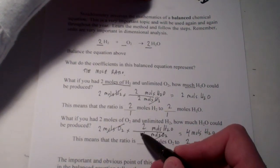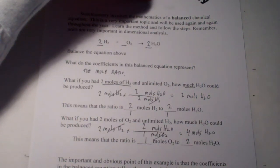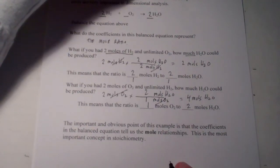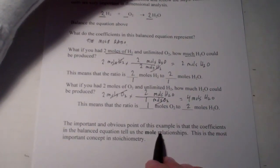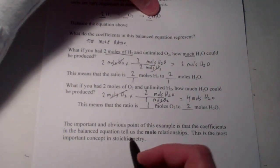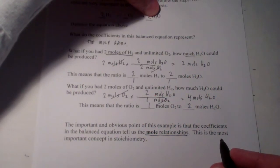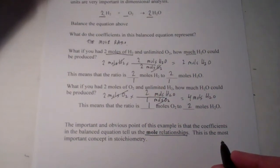In our mole ratio, we will be using the coefficients from the balanced equation. The important, and I hope obvious point of this example, is that the coefficients in the balanced equation tell us the mole relationships. This is the most important concept in stoichiometry.